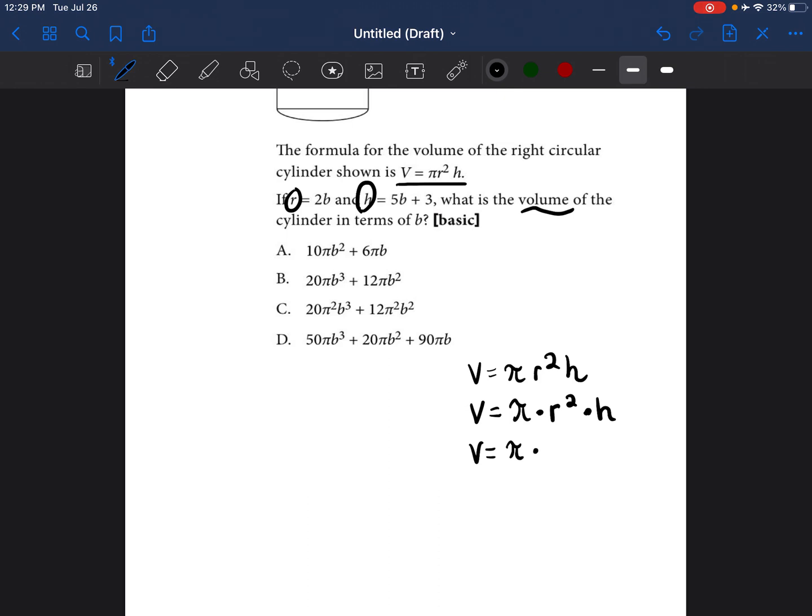So now I'm just going to fill in what the values are. Pi just stays the same, but we know that r is equal to 2b. So instead of writing r, I'm going to write 2b squared multiplied by h, which is 5b plus 3. 5b plus 3. And I'm going to put that in parentheses. So now let's just go ahead and multiply things out. We're just going to bring down the pi. Then we're going to do 2b squared. So 2 squared would be 4. B squared would just be b squared. And then I'm going to go ahead and bring down the 5b plus 3.